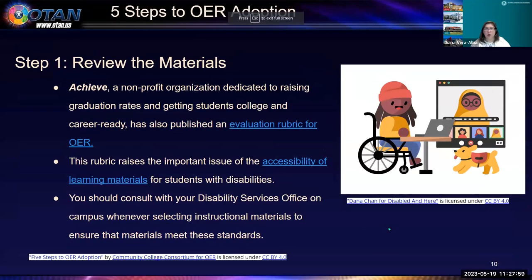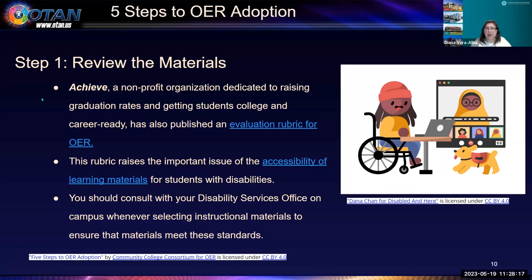We're still on step one. There's an evaluation rubric here from Achieve, a nonprofit organization dedicated to raising graduation rates and getting students college and career ready. They've published an evaluation rubric for OER based on those guidelines. There are also accessibility of learning materials specific rubrics for students with disabilities. If you like that checklist but want to add more on accessibility or college and career readiness, since these materials are open resources, you can do that and develop your own checklist or rubric.